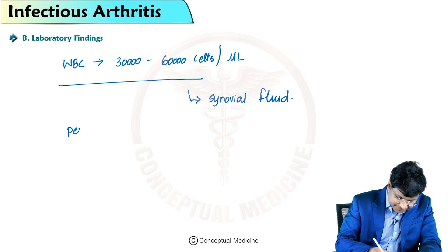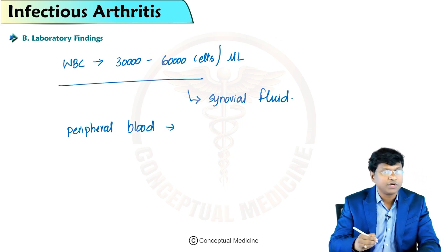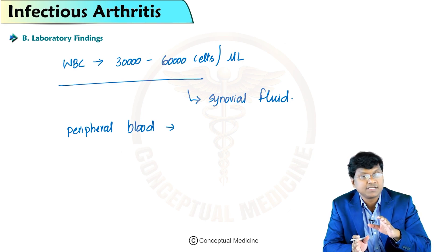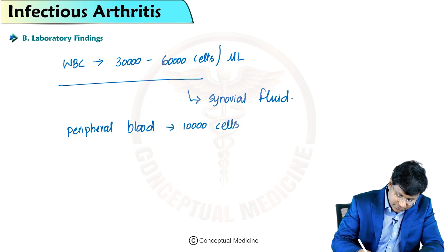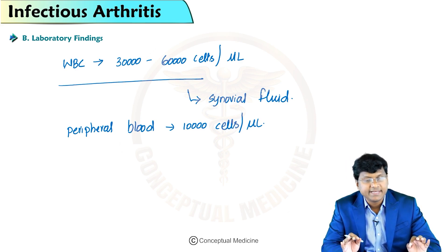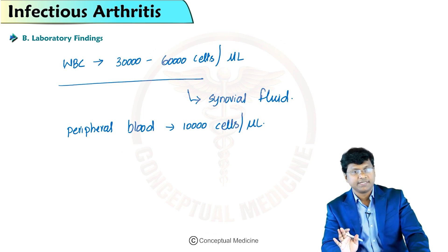In the peripheral blood, the leukocyte count averages about 10,000 cells per microliter, and it is elevated in less than one-third of patients with gonococcal arthritis.